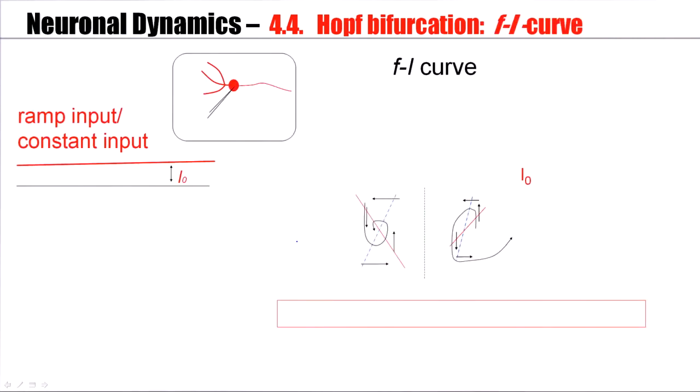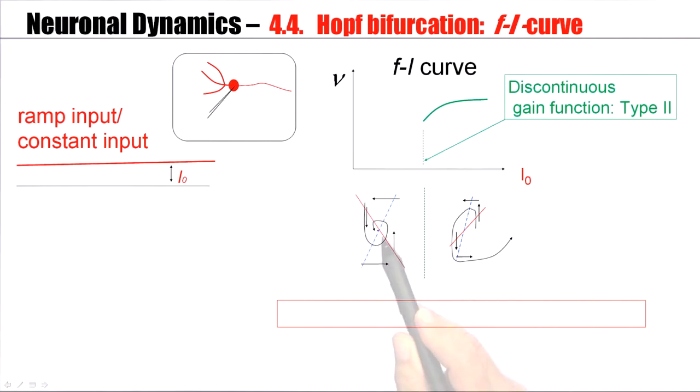We know that there is a stable limit cycle, and this limit cycle corresponds to a large amplitude, to a much larger amplitude of the oscillation. To summarize, with the Hopf bifurcation, we have a transition from a stable fixed point with a rotational component to an unstable fixed point with a rotational component. For a subcritical Hopf bifurcation, this unstable rotational component leads to a limit cycle of large amplitude, which we can interpret as a sequence of action potentials as repetitive firing, and repetitive firing sets in at a finite frequency. We have a discontinuous F-I curve, or discontinuous gain function.